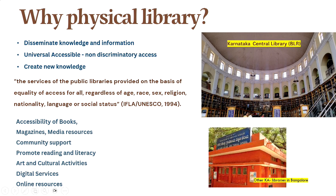The broader objective, if you think about it, is knowledge — dissemination of knowledge and information — and making it universally accessible. If you have a public library, it should be accessible to the people around it. If you restrict access by not letting people borrow books, that's becoming discriminatory. And also, it should help people create new knowledge — for researchers, especially in academic libraries, we read journals and write papers.